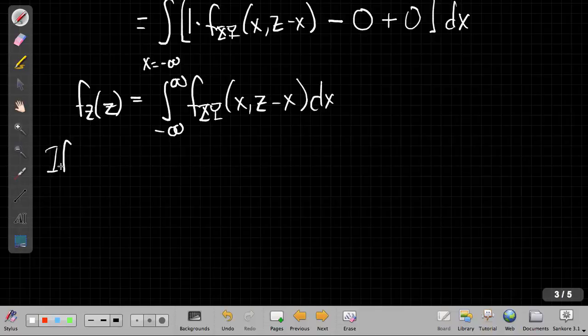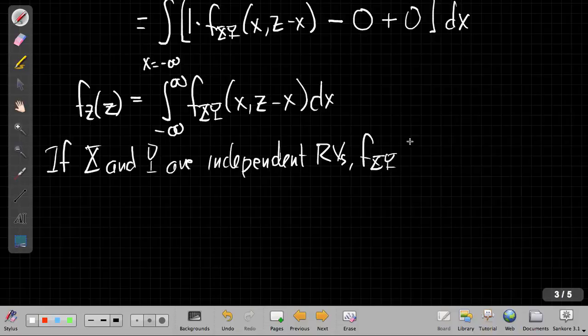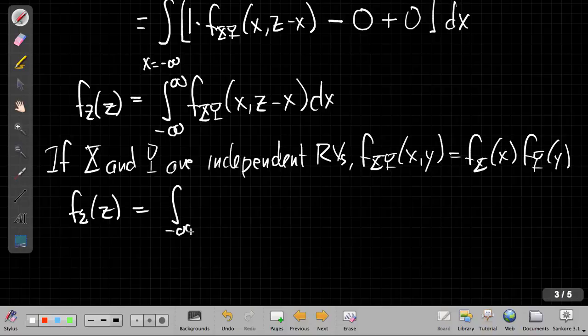So this is my PDF in general for the sum of two random variables. The interesting result that we exploit a lot is to take it one step further: what if those two random variables are independent? If x and y are independent random variables, then we know the joint PDF is the product of the marginals. So f(x,y) is f_X(x) times f_Y(y).